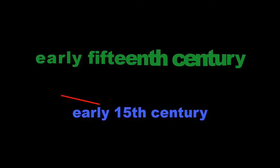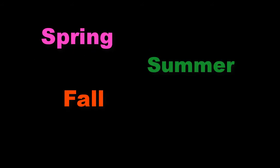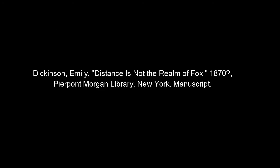When all that is expressed is a general date, it is written in lowercase words rather than using numerals. Seasons are always capitalized in the citation. And if the date of the work is uncertain, this is indicated in the works cited list by a question mark.